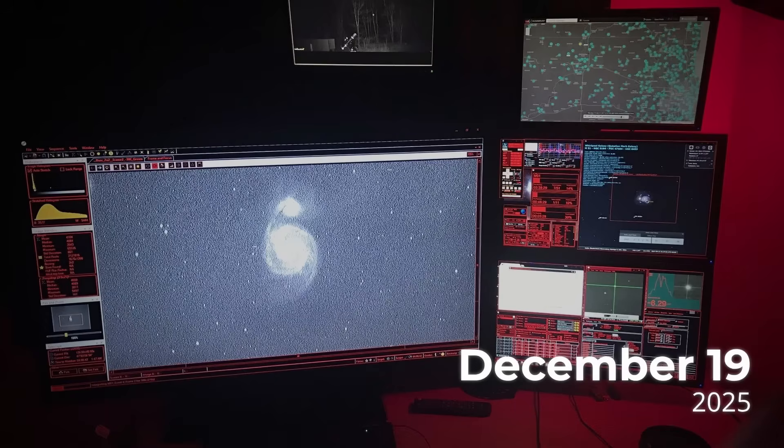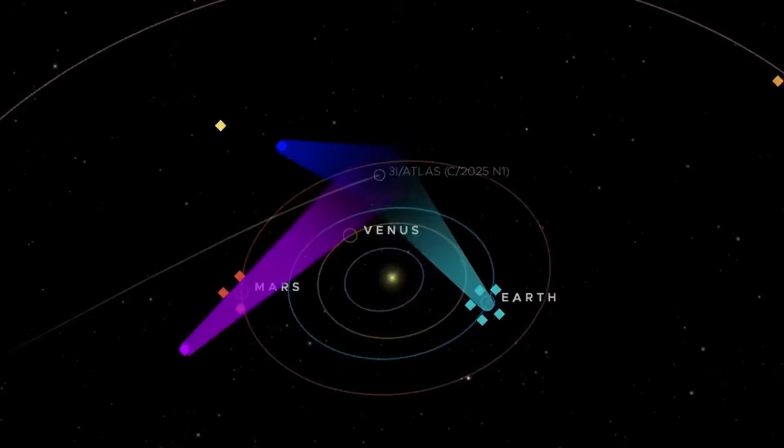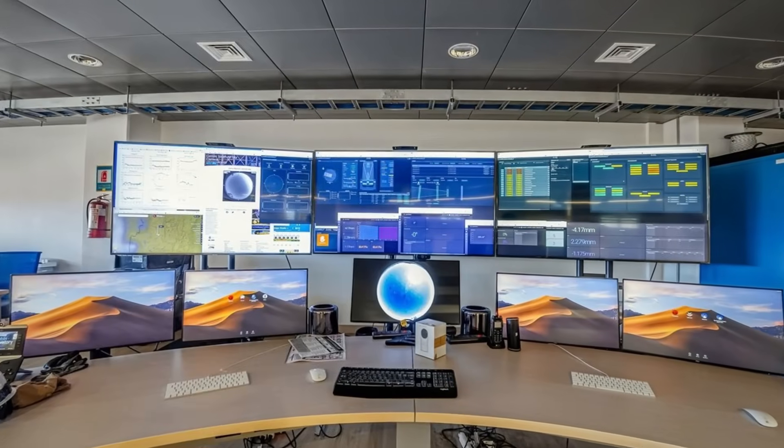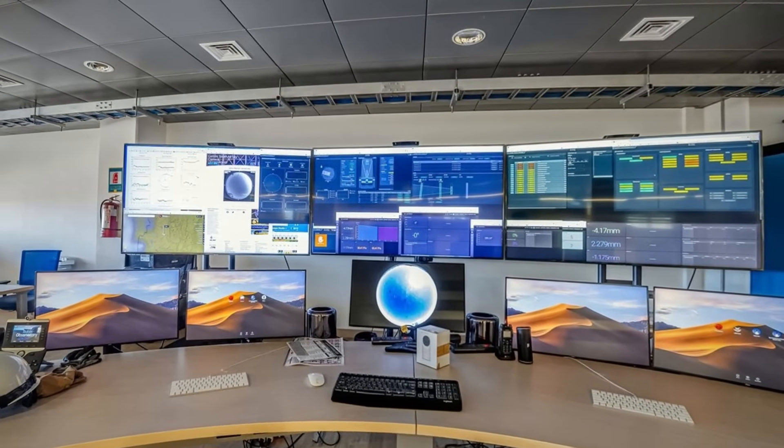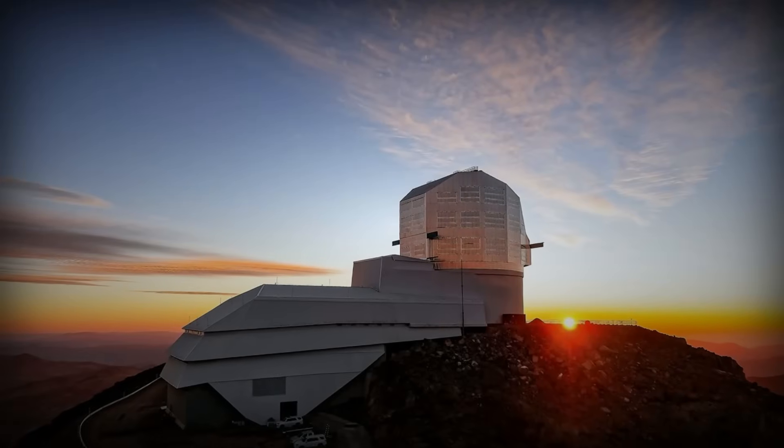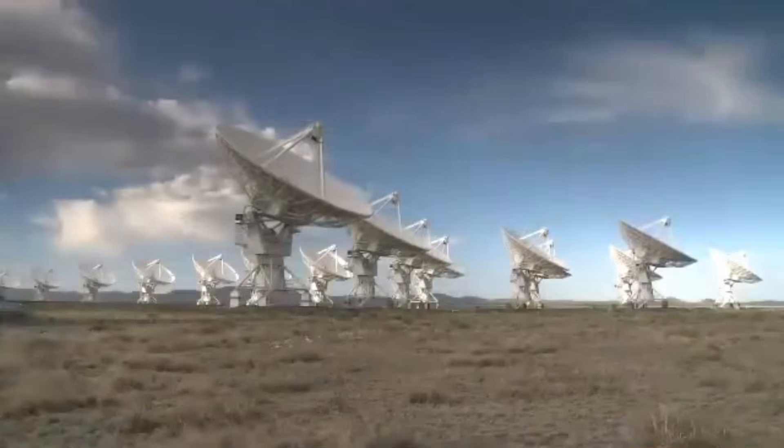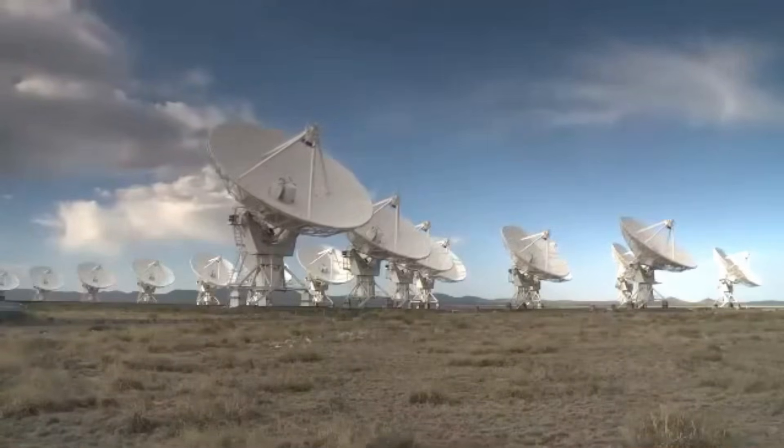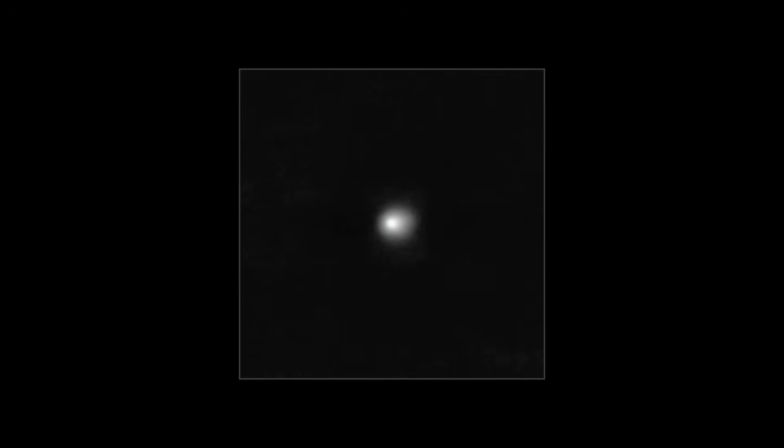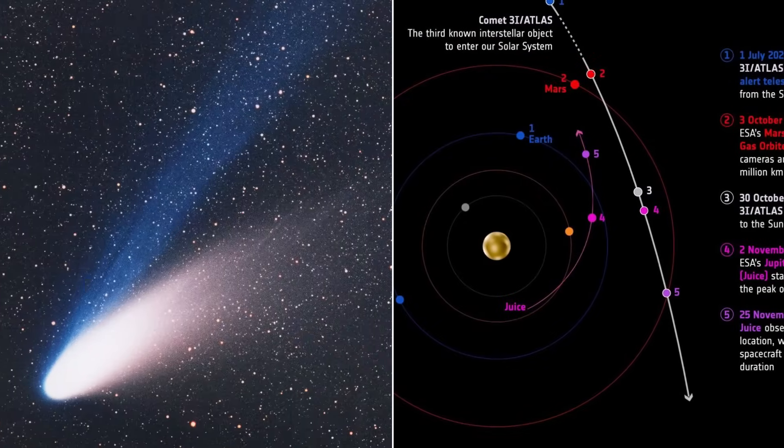The next milestone arrives December 19, 2025. On that date, 3i-Atlas makes its closest approach to Earth, still at a safe distance, but ideally positioned for intensive observation. The Vera C. Rubin Observatory, Hubble, and other major facilities are scheduled to capture data looking for unexpected motion, radio signals, or optical flashes. This window is the best opportunity to catch signs of controlled movement or detect any anomaly that might challenge natural explanations.